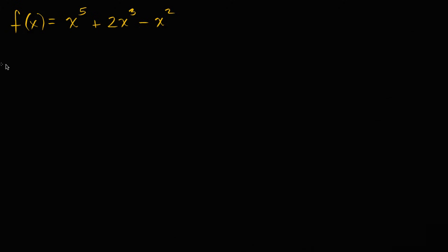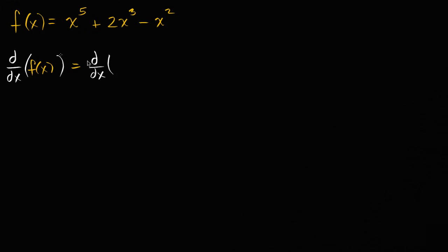The first thing I'm going to do is take the derivative of both sides. So we could say the derivative with respect to x of f of x is equal to the derivative with respect to x of x to the fifth plus two x to the third minus x squared. The notation — you could view this as the derivative operator. This says I want to take the derivative of whatever is inside of the parentheses with respect to x.